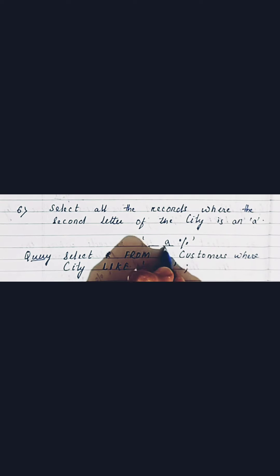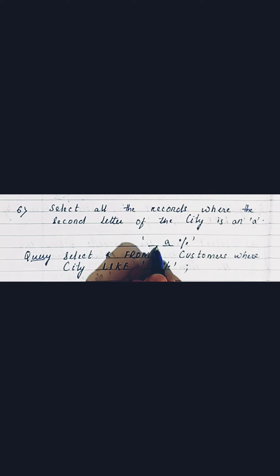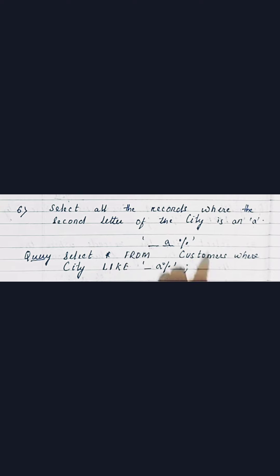Moving to the next question: select all the records where the second letter of the city is 'A'. Here only one letter appears before 'A', so we use the underscore — which represents exactly one unknown character — followed by 'A', then a percent sign for any remaining letters. The query is: SELECT * FROM customers WHERE city LIKE '_A%'.